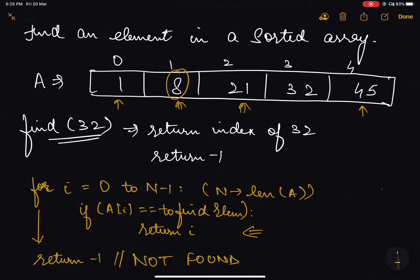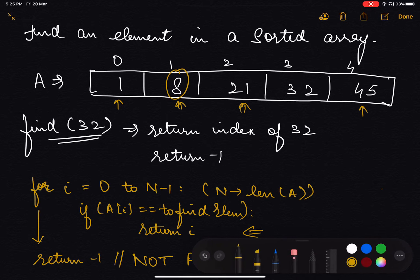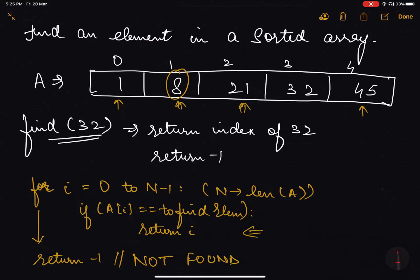What is the time complexity of this algorithm? It is clear to see that this for loop executes for n iterations, making this an O(n) algorithm — thus it has a linear time complexity.